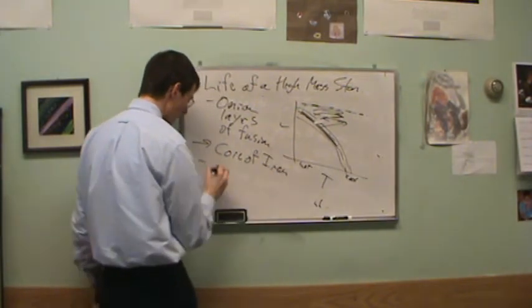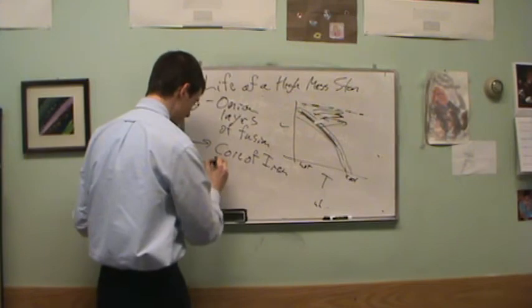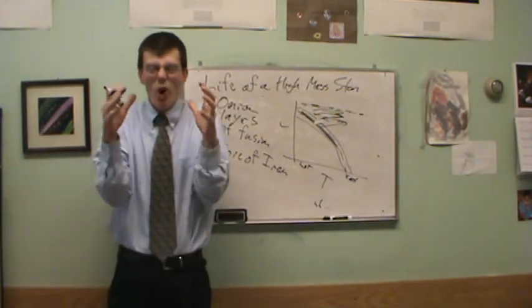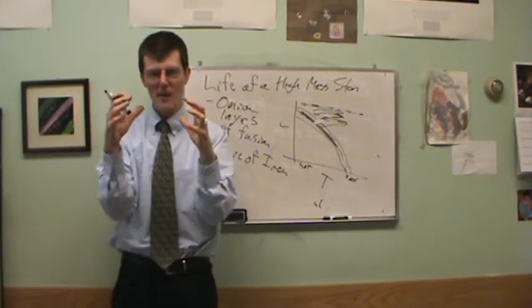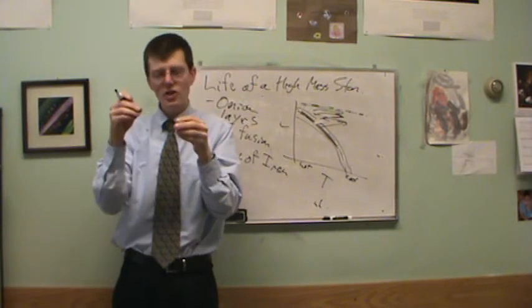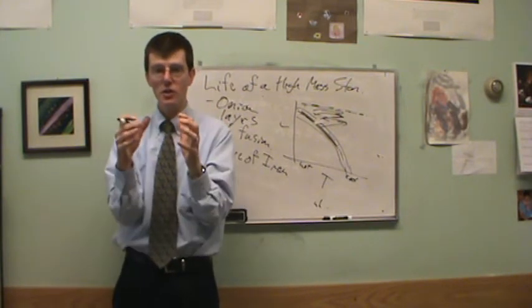So it builds up a core of iron. And finally, it beats electron degeneracy pressure by destroying the electrons. That core of that star has so much mass, pressure, heat, all this sort of thing, temperature going on there, that the electrons are crushed into the protons themselves and turned into neutrons.